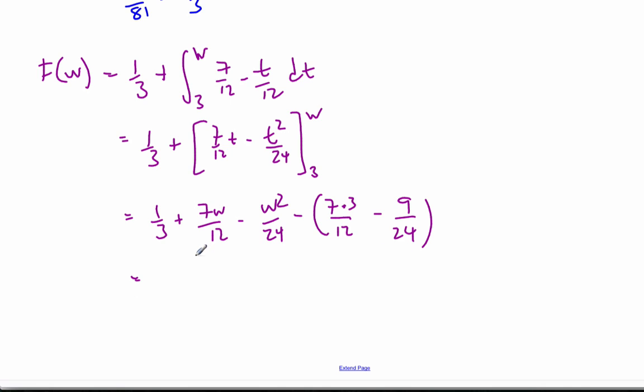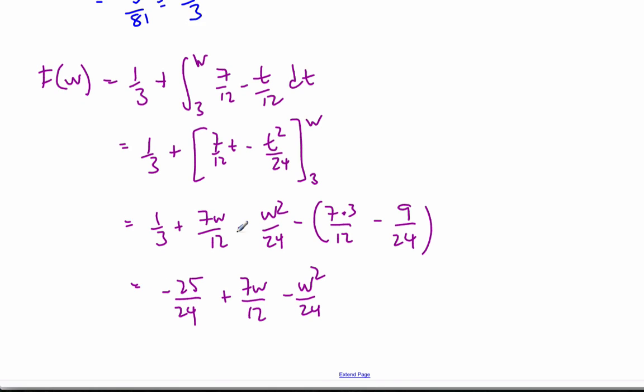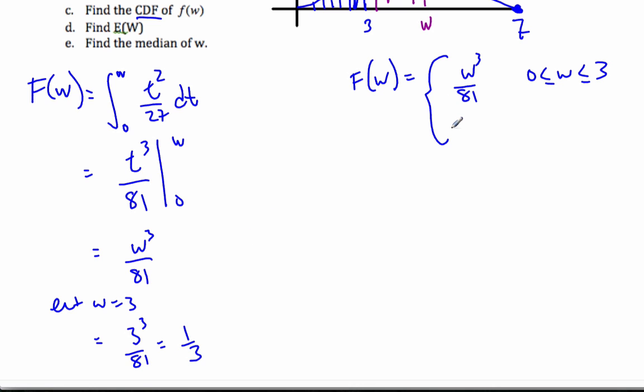I end up with negative 25 over 24 plus 7W over 12 minus W squared over 24. Now I did this on scrap paper, but that's what this will simplify to, and so this represents the final piece. So this particular function then will go from negative 25 over 24 plus 7W over 12 minus W squared over 24. And I use this part when I go from 3 to 7.